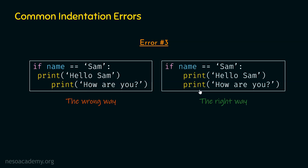The correct way should be this: either use one space or four spaces for indentation — but be consistent. Here we are using one space before one print statement and four spaces before the other, so there is no uniformity. In the correct code, there are four spaces before both statements. One thing you should always remember is that you must maintain uniformity throughout. If you are using four spaces to represent indentation, use four spaces throughout the program. So this was error number three.